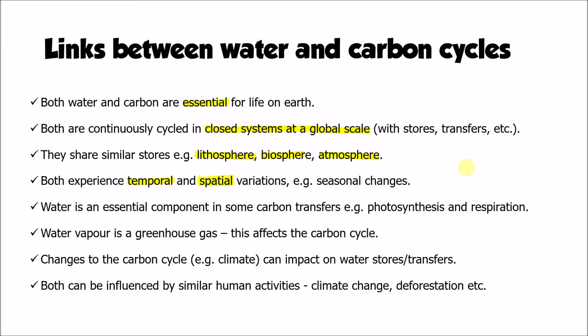Water is an essential component in some of the transfers happening within the carbon cycle. Photosynthesis and respiration can't happen without the presence of water, so the water cycle is in fact influencing the carbon cycle. Equally, water vapour is a greenhouse gas, so increased amounts of water vapour in the atmosphere will affect the carbon cycle through climate change.